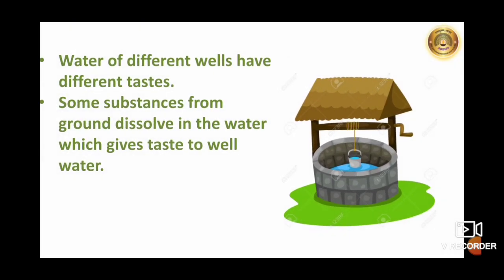Now we will see the example of well water. Have you heard that water from different wells can have different tastes? Why? From where does the water go into the well? The water which we get from rain seeps into the ground, passing through many layers of stone. Some substances from the ground dissolve in water, which gives taste to well water.